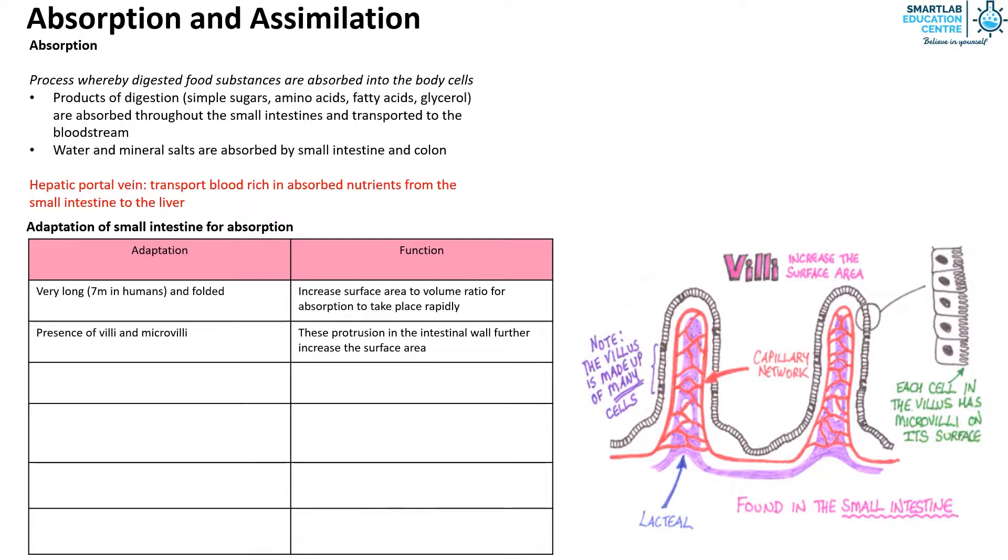The villi have one cell thick epithelium, allowing the diffusion of digested food substances to occur rapidly into the blood capillaries.